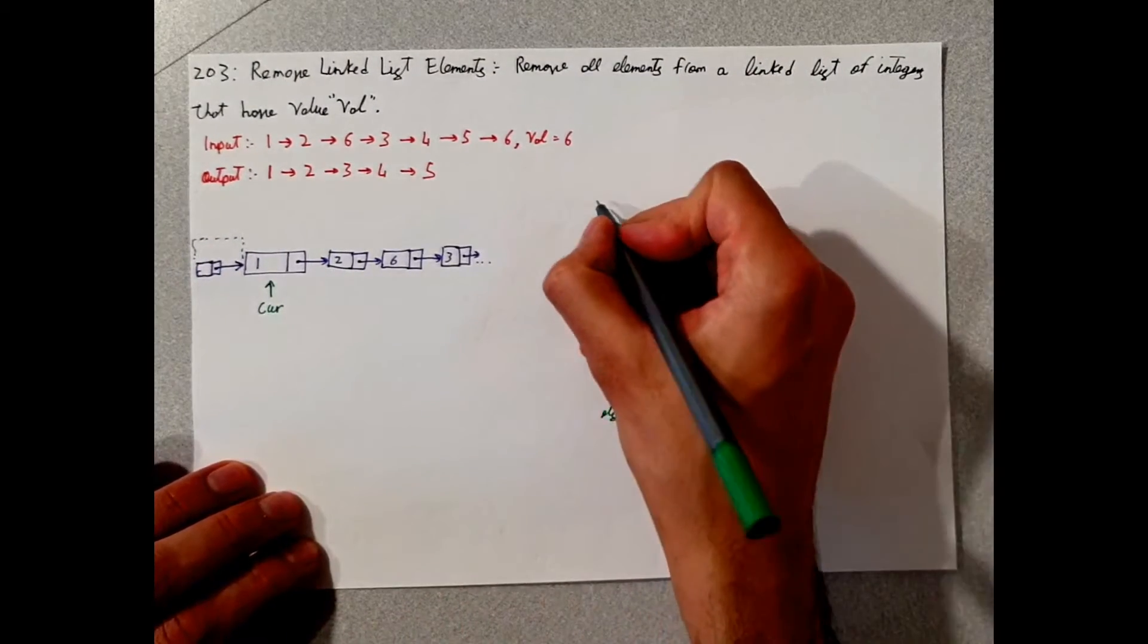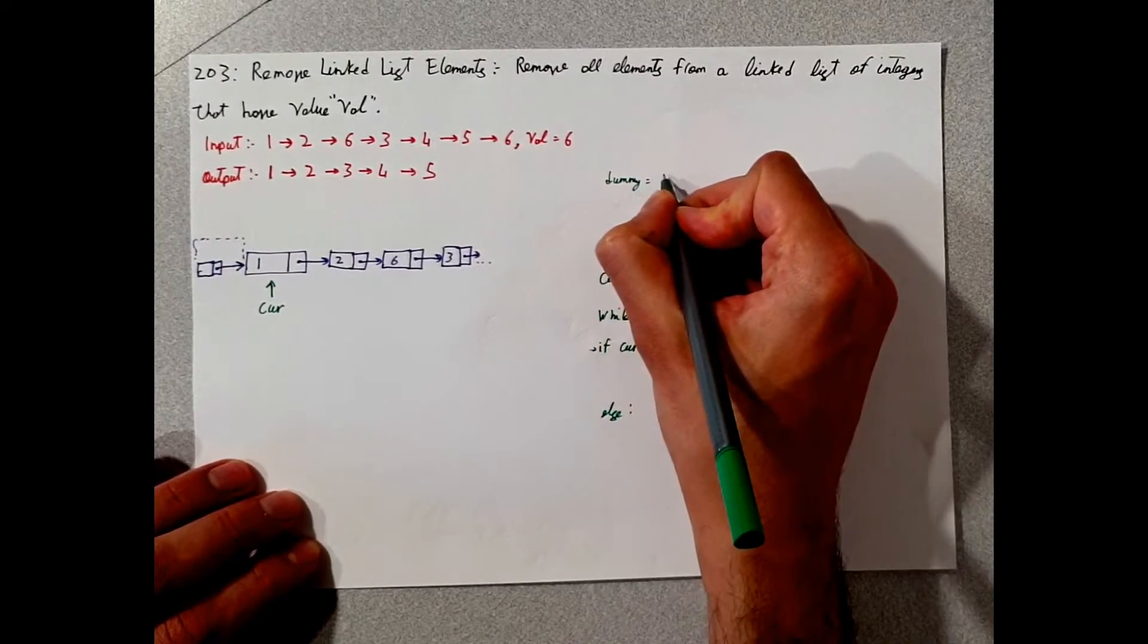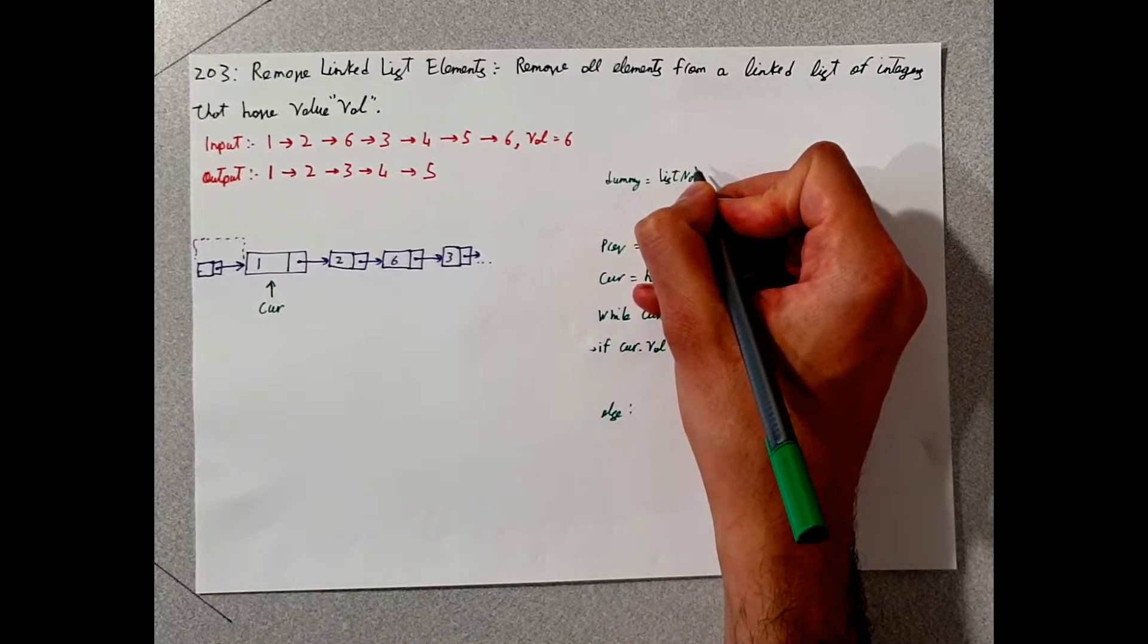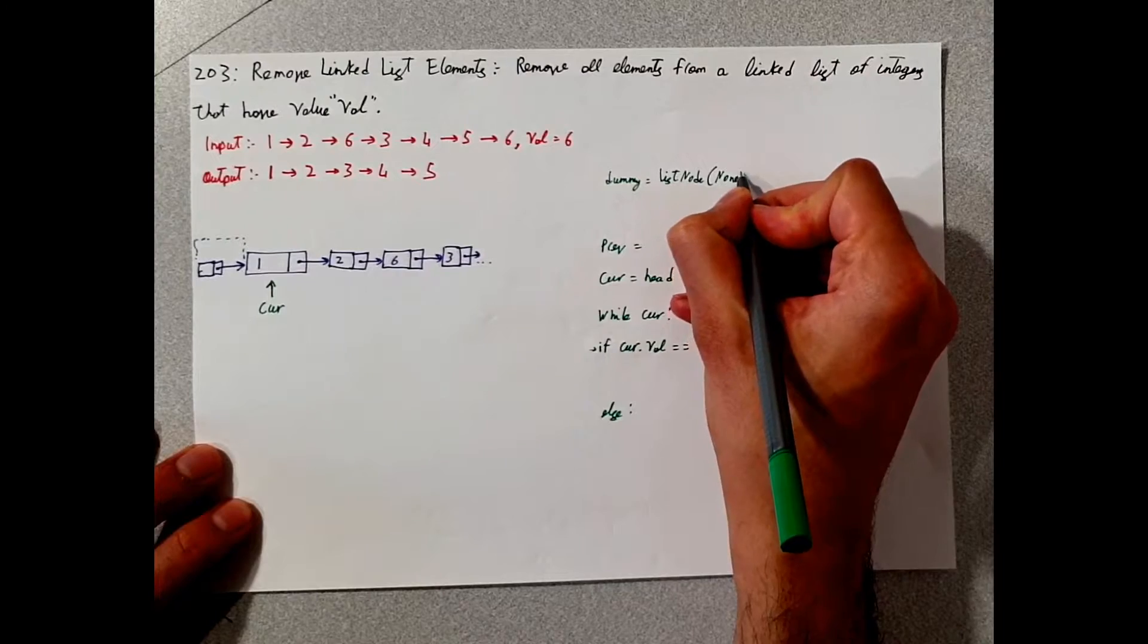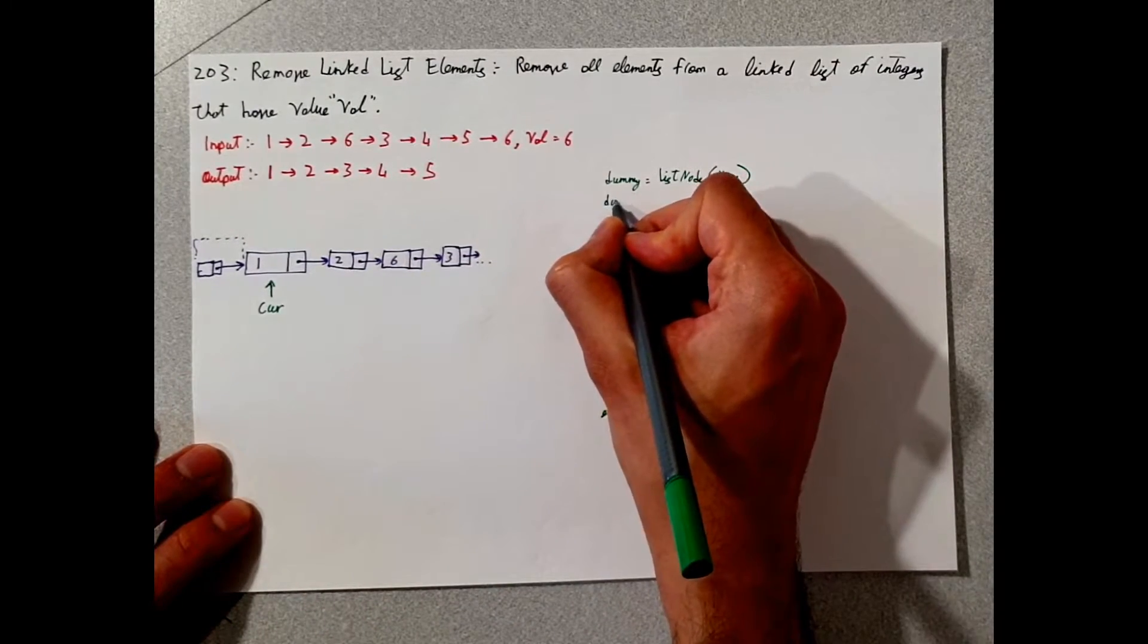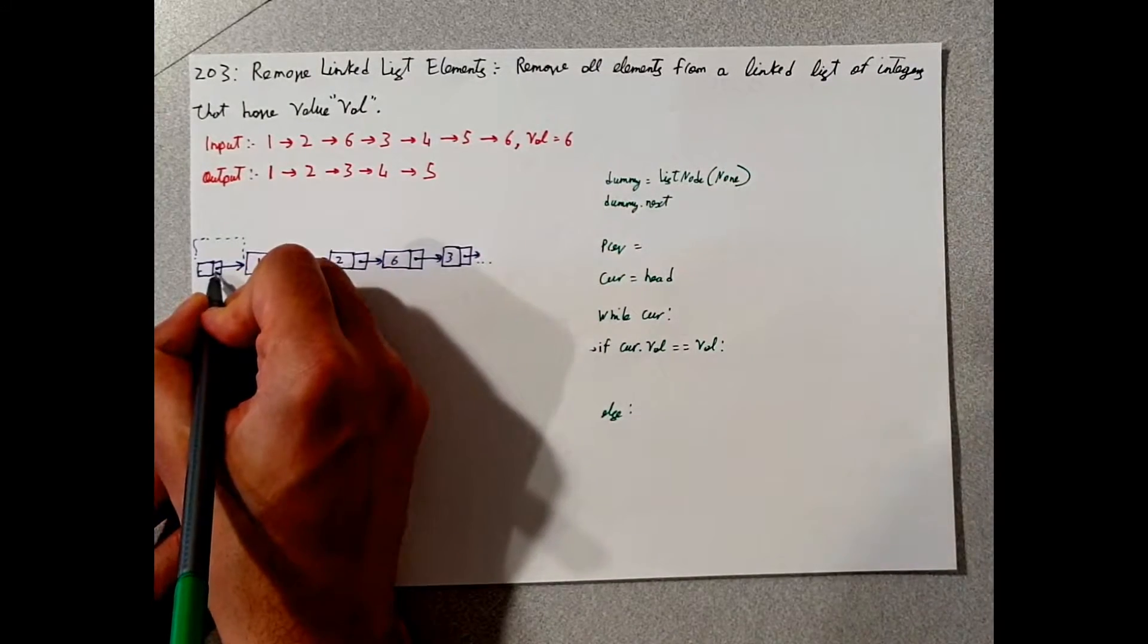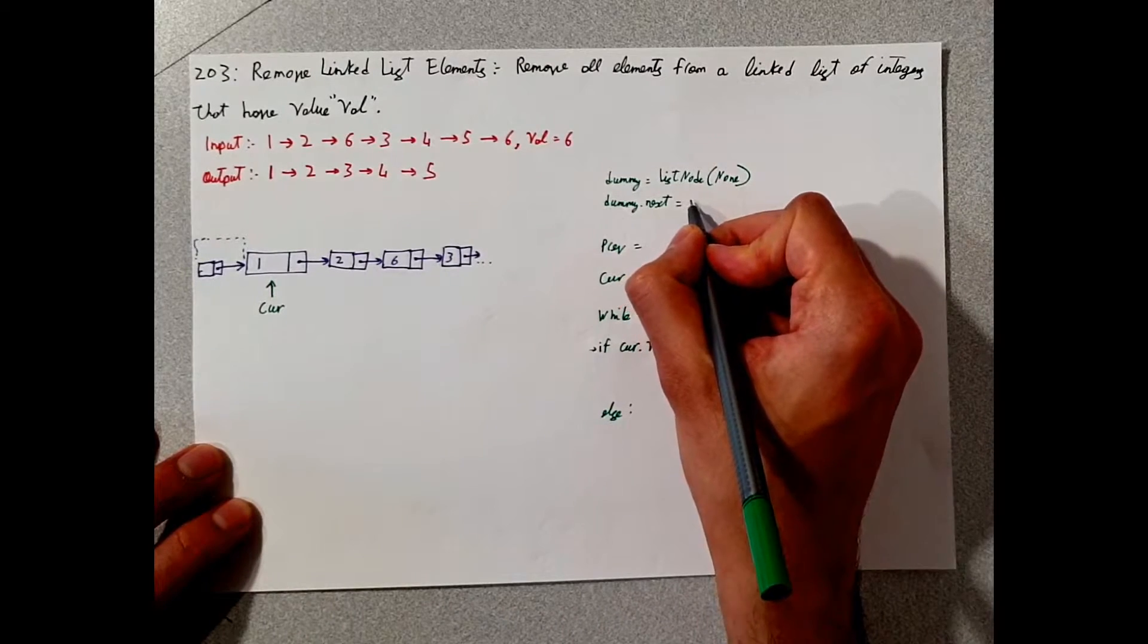So the way we can do this in Python is we can say dummy equal ListNode and in LeetCode, they define the list node earlier. And we can just give it none and we can say dummy.next, which is this right here, points to the head.